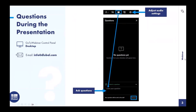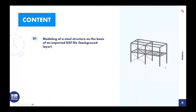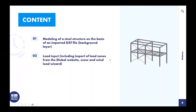To the agenda today: at first, I will model the steel structure. Before I do that, I will import a DXF file as a background layer, and then the modeling starts. Then follows the load input — I also use the snow and wind load results and the GeoZone tool from the website and will import values for a certain place. The last topic today is the application of imperfections. Now we switch to the program, RFEM 6.